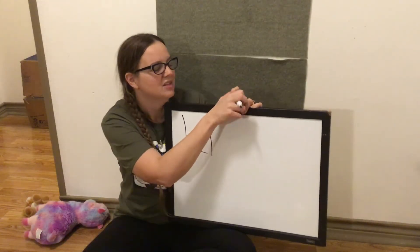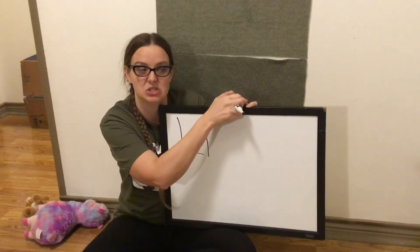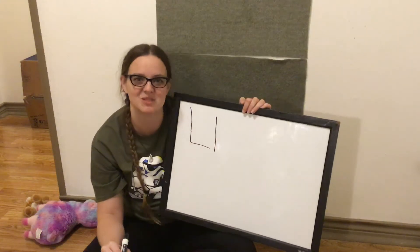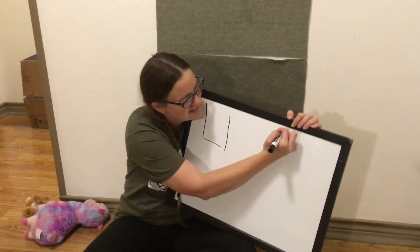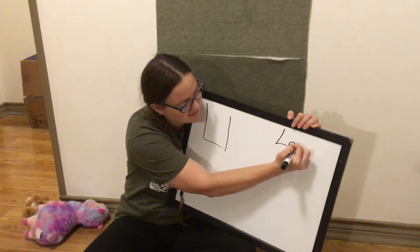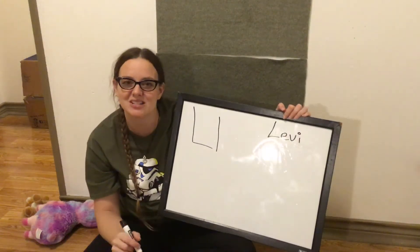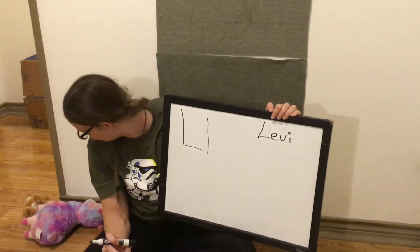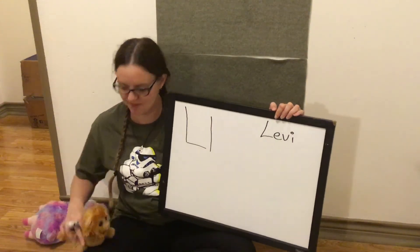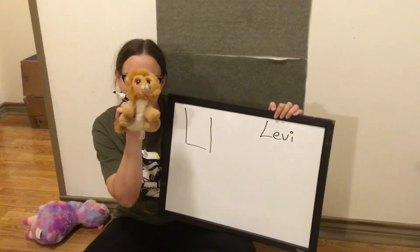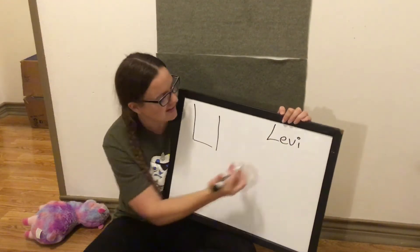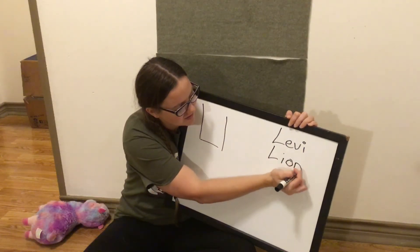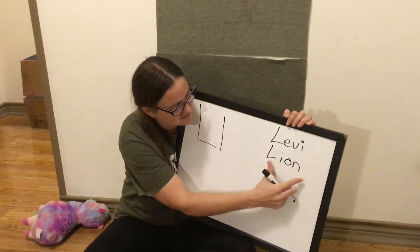Alright, let's see if we can come up with some things that start with letter L. We have a friend whose name starts with letter L — his name is Levi. Levi's name starts with the letter L. And look, I've got a lion. Lion starts with L — L-I-O-N.